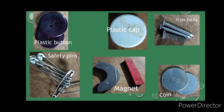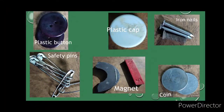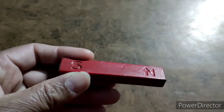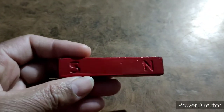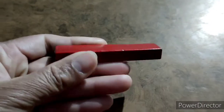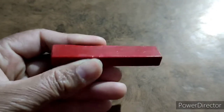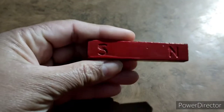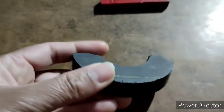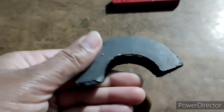We need materials: a plastic button, plastic cap, iron nails, safety pins, and a coin. We also need a magnet. You can use any material you are interested to check as magnetic or non-magnetic. This is a bar magnet — I will use this bar magnet, but if you don't have one, you can use any magnet you have.